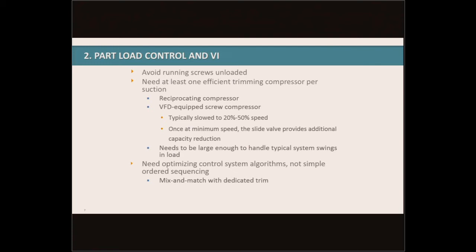We want to make sure that one compressor per suction group is dedicated as a trim compressor, and we want that compressor to be the most efficient one. Reciprocating compressors, although there aren't too many out there anymore, have really good part load performance — at 50% load, they use about 50–52% power, making them a very good trim compressor. If you have a screw compressor with a VFD, that's going to be your most efficient screw compressor and the one you want dedicated as your trim compressor for that suction.